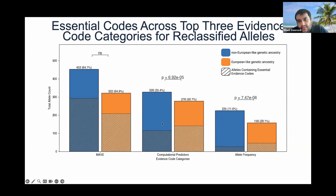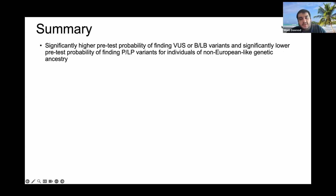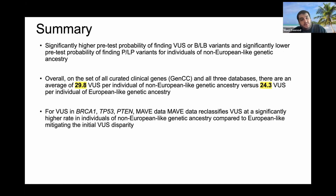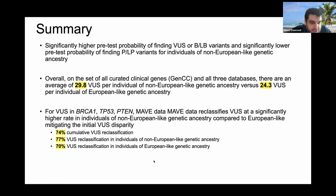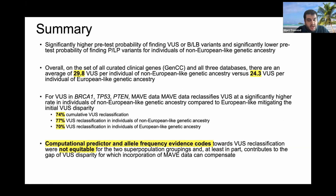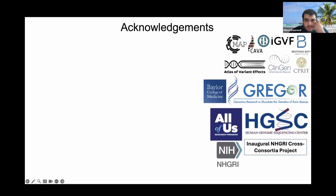In summary: there is a significantly higher pre-test probability of finding a VUS or benign/likely benign variant, and significantly lower probability of finding a pathogenic/likely pathogenic variant, for individuals of non-European genetic ancestry. Across all curated clinical genes and databases, there is an average of about 29.8 VUS per individual of non-European genetic ancestry versus 24.3 per individual of European-like ancestry. In these three genes, the cumulative reclassification rate is 74% — 77% on the non-European side versus 70% on the European side — showing a 7% significant difference. Computational predictor and allele frequency evidence codes were not as equitable as expected, contributing to the original VUS disparity gap, which incorporation of MAVE data appears able to compensate for.